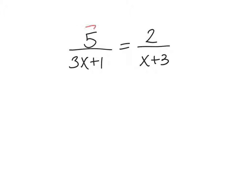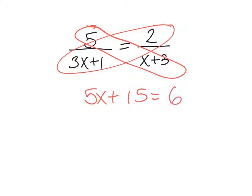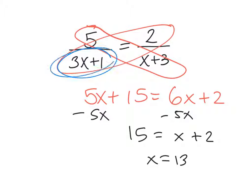So you're going to cross multiply, and you're going to set them equal. So 6x plus 2 because I distributed. Now you want to get your x's on one side. So it's going to be 15 equals x plus 2. So x equals 13. And then make sure 13 is not a restriction. So that's the answer.